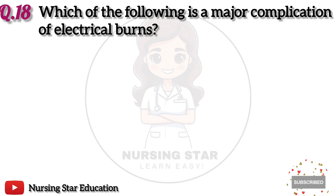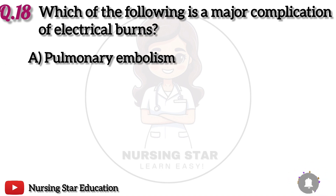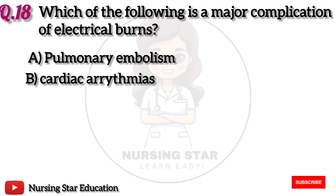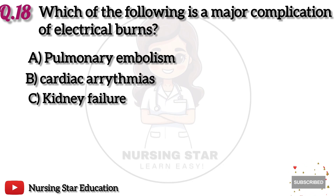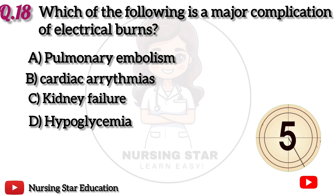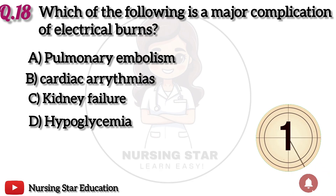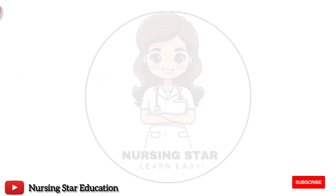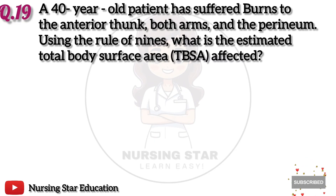Question 18: Which of the following is a major complication of electrical burns? Option A: Pulmonary embolism. B: Cardiac arrhythmias. C: Kidney failure. D: Hypoglycemia. The correct answer is B: Cardiac arrhythmias.